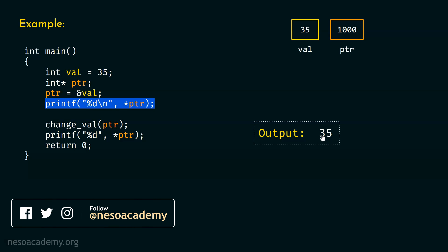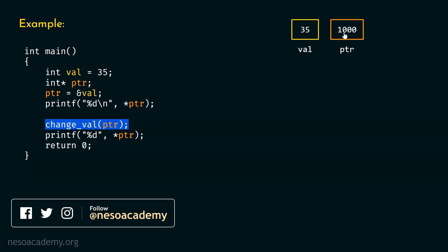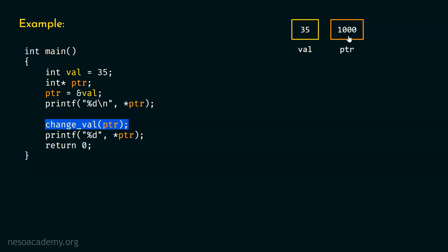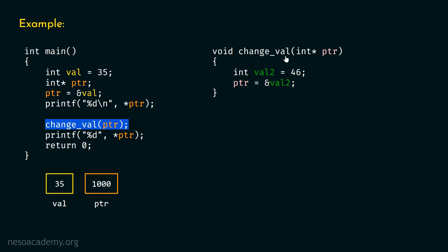But we are not done with this program yet. After this printf function, we have the change_val function as well. We are trying to change the value of this variable, and to this change_val function we are passing this pointer ptr — which means we are passing the value of ptr. This is passed by value. To this function we are passing address 1000. You can see the parameter of this change_val function: here we have int star ptr, which is a pointer local to this change_val function. Remember that this pointer is not the same as the one in main — they are different.